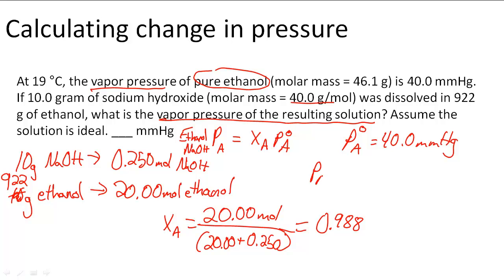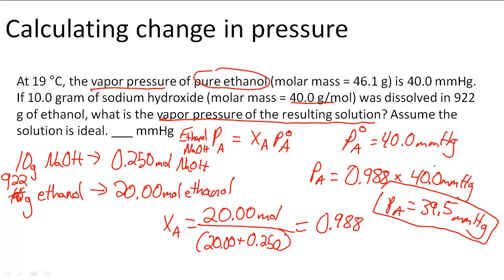So now all we have to do to figure out PA is 0.988 times 40.0 mmHg and the pressure that we have now after the sodium hydroxide has been added is 39.5 mmHg. So we can calculate the change which is actually 0.5 mmHg by subtracting the initial minus what it became. So here the answer is 39.5 mmHg.